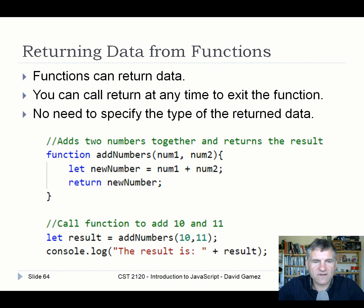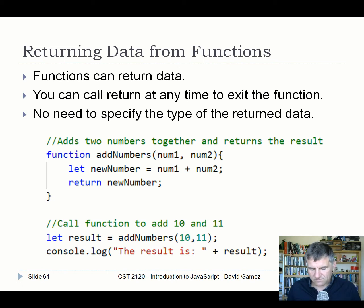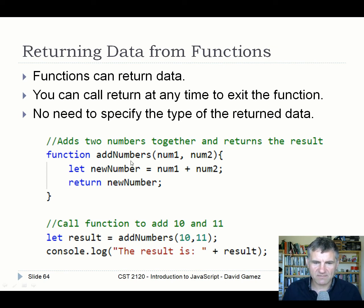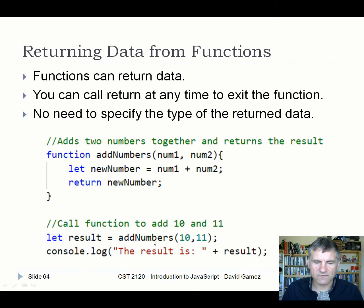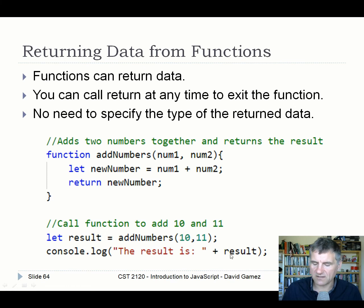In JavaScript you can return data from functions, and you can also use a bare return statement to exit from the function at any time. You don't have to specify the return type. For example, a function addNumbers takes two parameters, number1 and number2, creates a sum, and returns it. When you call addNumbers(10, 11), the result is assigned to a variable and logged out.